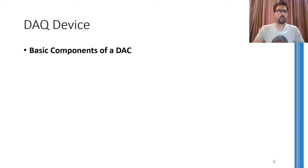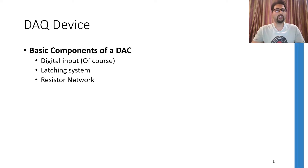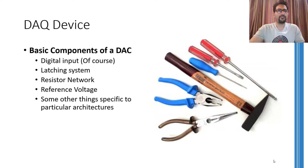The basic components required for a digital to analog converter include the digital input, a latching system that will retain the digital input for some time, a resistor network which is used to convert the digital level into the analog level, and the reference voltage that is used to generate the analog output. Apart from these, there are certain other things that will depend on the particular architecture of the digital to analog converter.